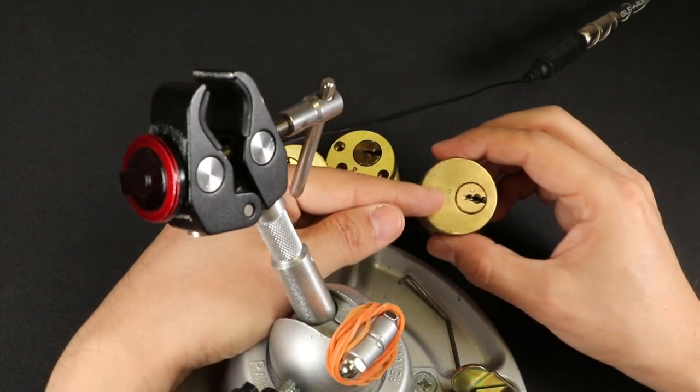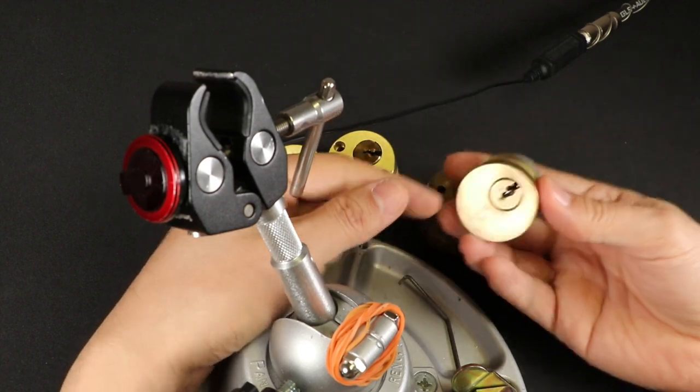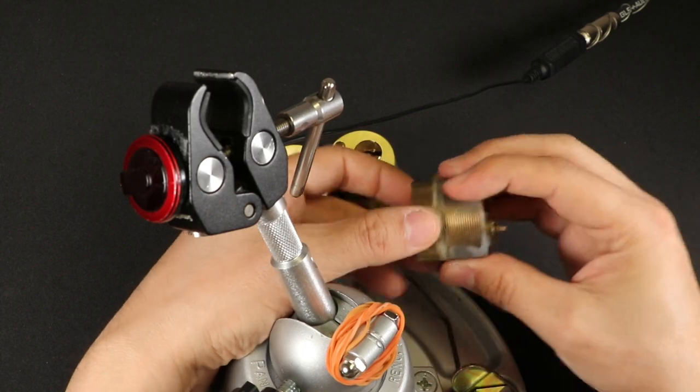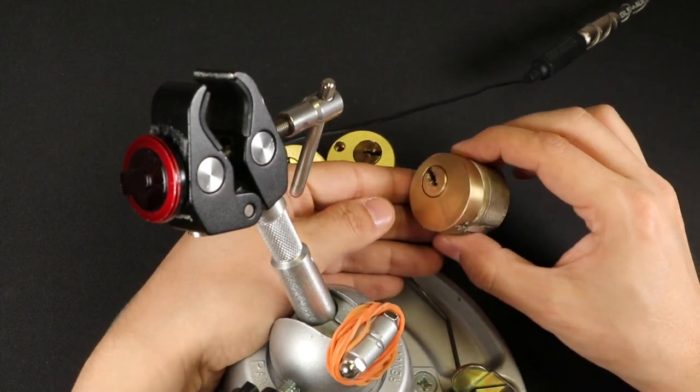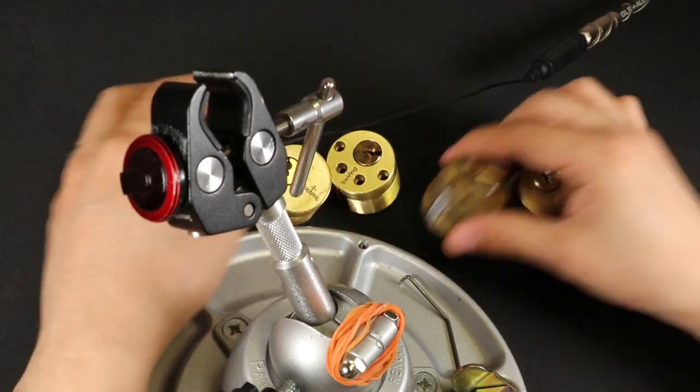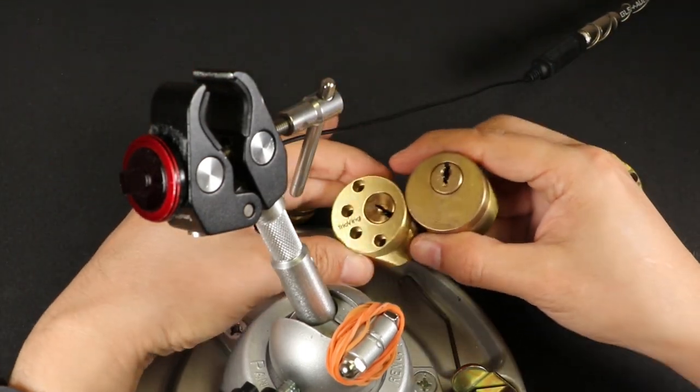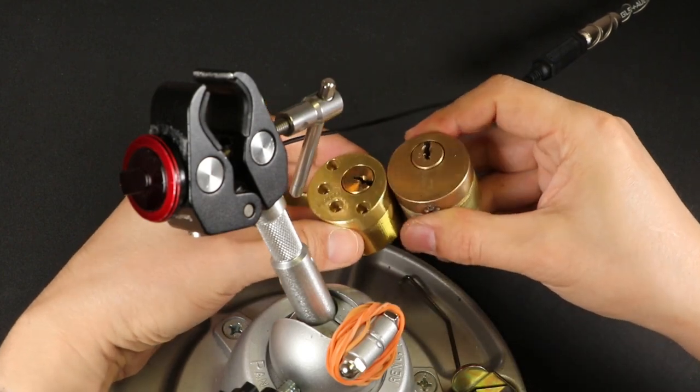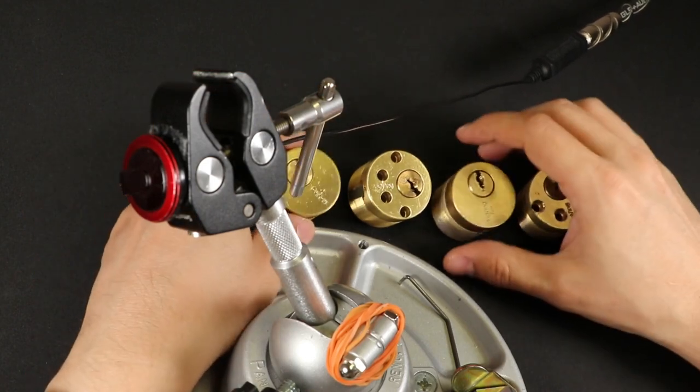But what I did is I soaked the face of this in some acetone and that took the plastic finish right off. And then I took some Brasso, it could use some more work, but I took some Brasso and made it a little bit cleaned up. But you can see it looks quite different color wise. I don't know if you can see it on the camera, but they do look quite different color wise in person.